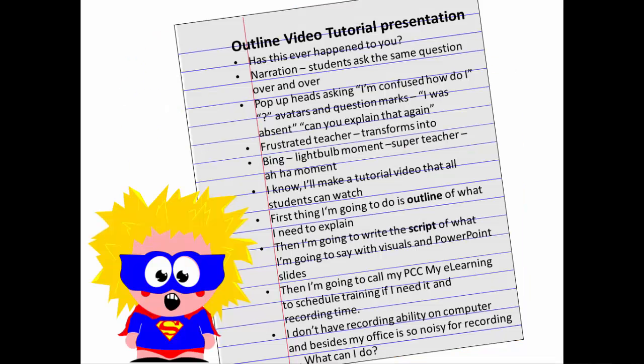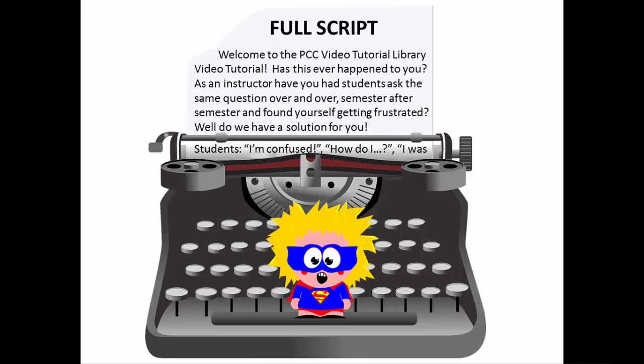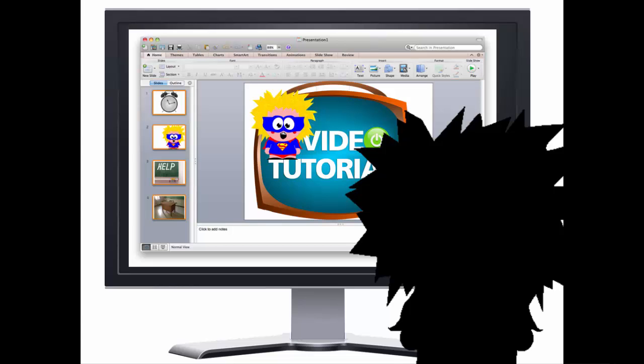The first thing I'm going to do is outline what I need to explain. Then I'm going to write a full script of what I'm going to say so that my PCC eLearning can add the closed captioning. I'll also get together my images and maybe make a PowerPoint to go along with my video.